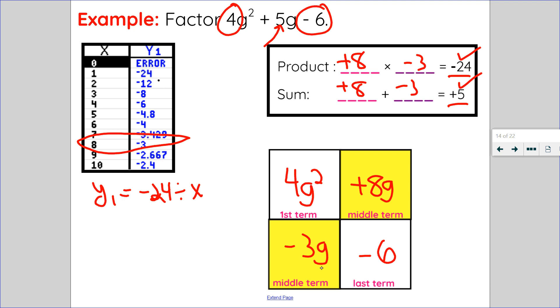Now I look at the factor pairs. So in row number 1, 4g squared and 8g, that has a GCF of 4g. In row number 2, -3g and -6 have a GCF of 3, but since this is negative, I'll take it out as subtract.